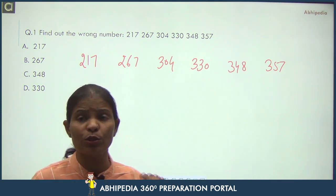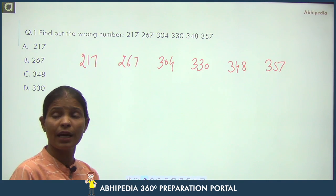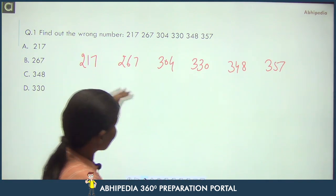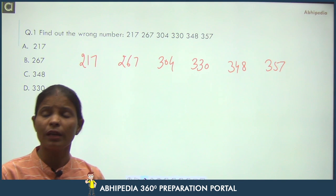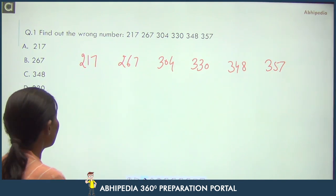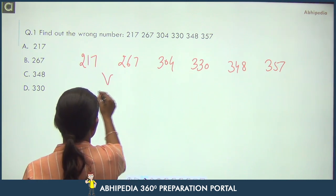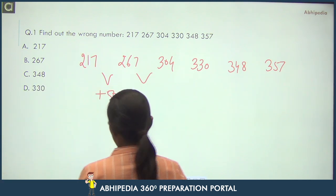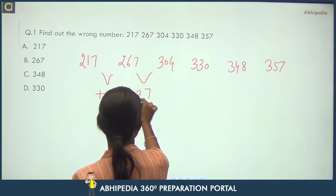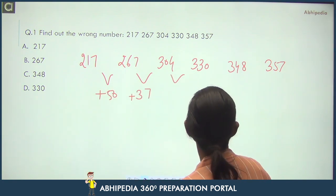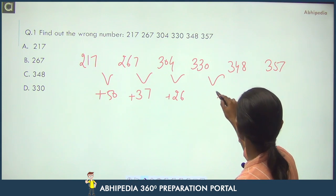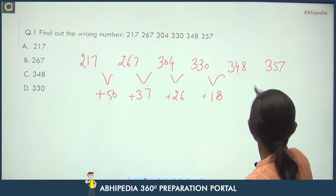If numbers are nearby, check the difference first. The difference here is: 50, then 37, then 26, then 18, then 9. Now check further — what pattern is in these differences.